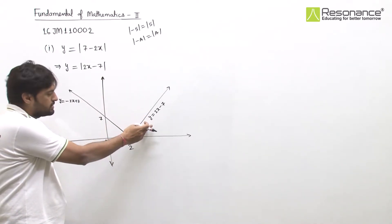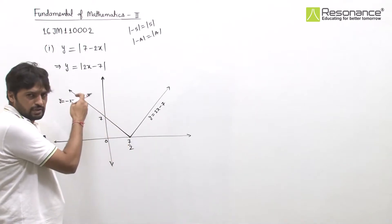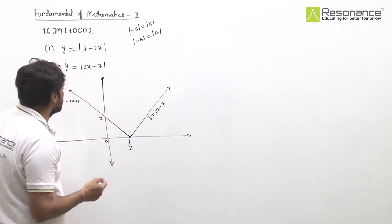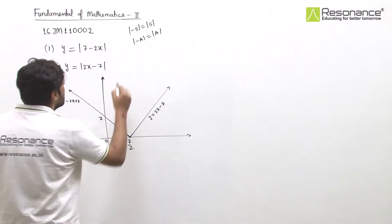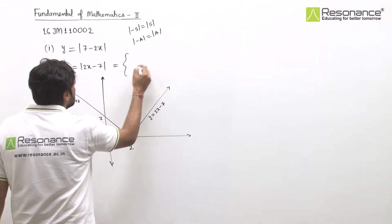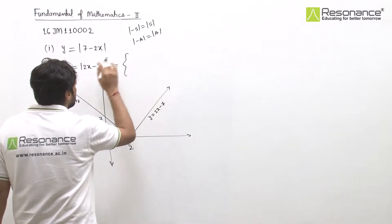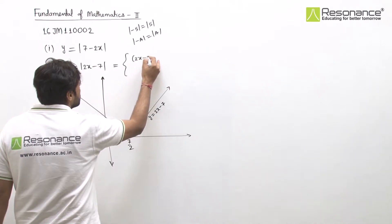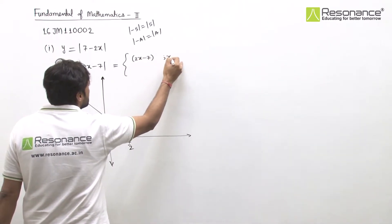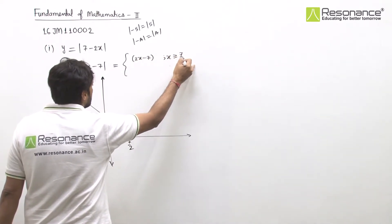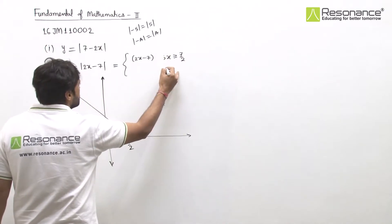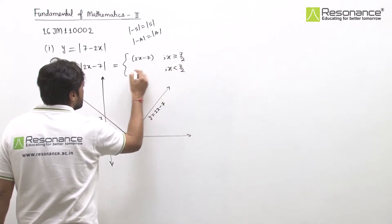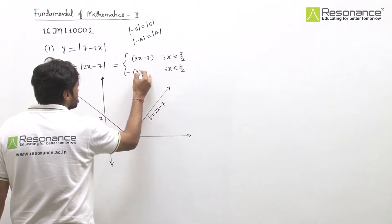We took one value greater than 7/2 and one less, and checked the endpoints to draw the graph directly. To define it properly: at x = 7/2, value is 0; for x greater than 7/2, the value is positive — open with plus; for x less than 7/2, open with minus, as per the definition of modulus.